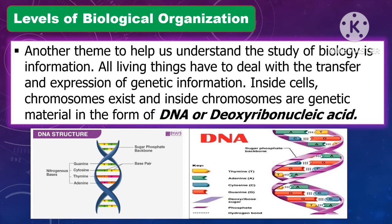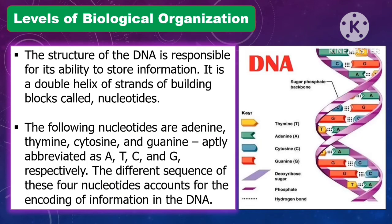Another theme to help us understand the study of biology is information. All living things deal with the transfer and expression of genetic information. Inside cells, chromosomes exist, and inside chromosomes is genetic material in the form of DNA, or deoxyribonucleic acid. The structure of DNA is a double helix of strands of building blocks called nucleotides: adenine (A), thymine (T), cytosine (C), and guanine (G). The different sequences of these four nucleotides account for the encoding of information in DNA.